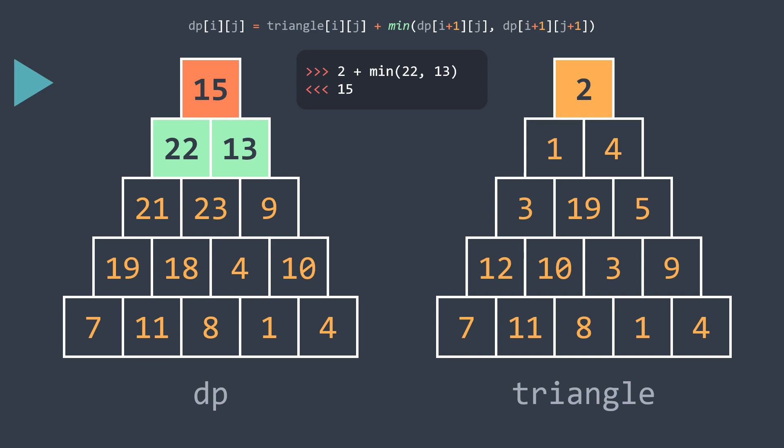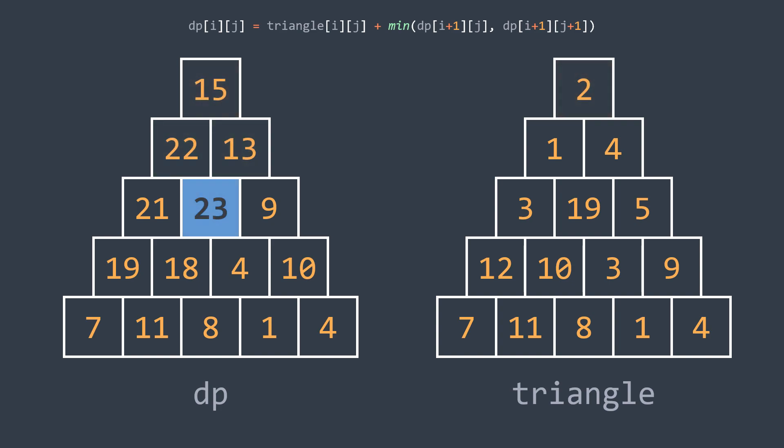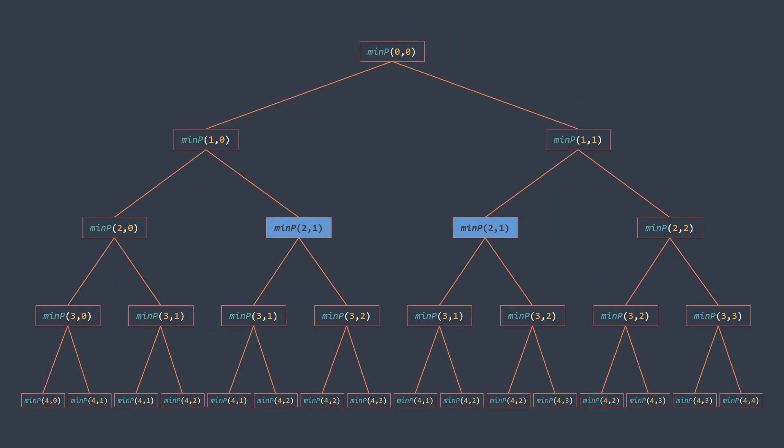You may ask: we follow the same logic as recursion, so why is this solution better? The answer is that unlike recursion, here we didn't repeat the same work uselessly. When we calculated the value of a cell, we could reuse it to calculate multiple other cells without recalculating it. This is the main difference between both solutions, and why dynamic programming is more optimized for this problem.